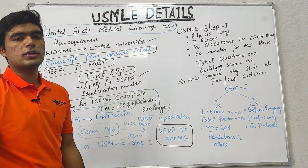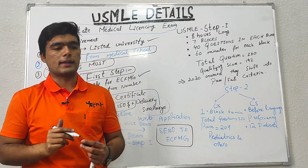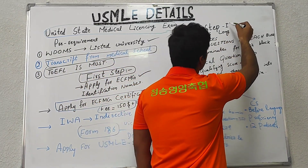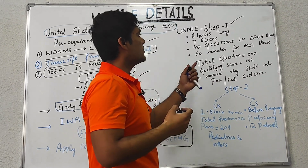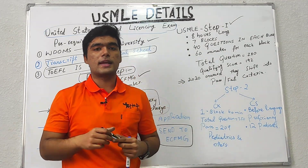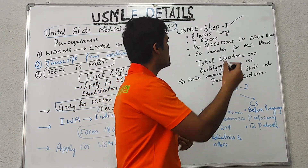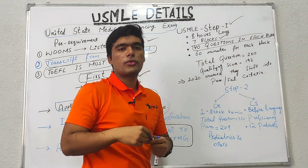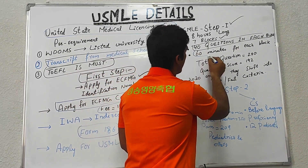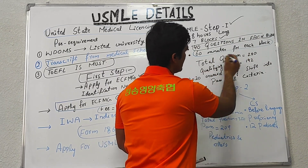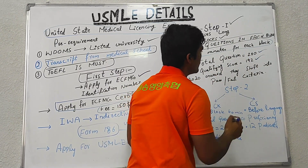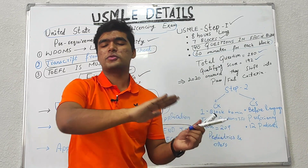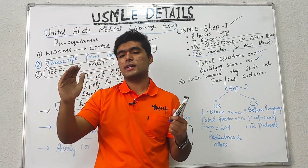After sending that form to ECFMG, you apply for USMLE. USMLE has basically 3 to 4 steps. Starting with Step 1: it is an 8-hour-long exam having 7 blocks, 40 questions in each block, and 60 minutes per block — 280 total questions. The passing or qualifying score is 192, but after 2020 they shifted to a pass/fail criteria to avoid mismanagement in Step 2.